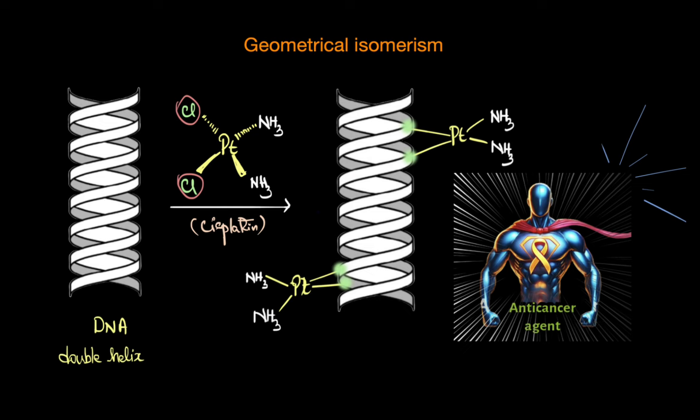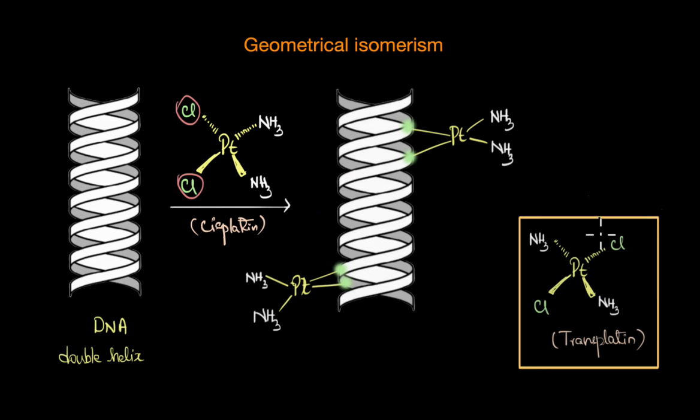But what about transplatin? The trans form of the same compound, on the other hand, is practically useless as an anti-cancer drug. The way the ligands are arranged does not allow the platinum metal to bind to the DNA in the same way as cisplatin does. As a result, transplatin cannot form the same DNA cross-links that stop the cancer cells from replicating or multiplying.